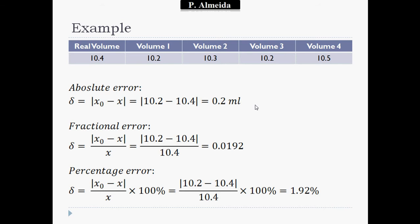Now for the same example, let's measure the fractional error. That's going to be the absolute error divided by the real value or the mean. That's going to be 10.2 minus 10.4, all divided by 10.4. That's going to give me 0.0192. Because I have milliliters divided by milliliters, the units cancel each other so I do not have units.